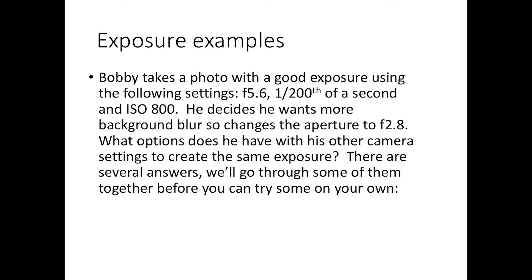Let's look at some examples. Bobby takes a photo with a good, well-balanced exposure using: F5.6, 1/200th of a second, and ISO 800. He decides he wants more background blur, and since a wider aperture gives a blurrier background, he changes his aperture to F2.8. What options does he have with his other camera settings to create the same exposure? Try to come up with at least one answer — pause the video now, work it out, then hit play to see the answers.